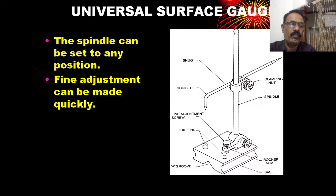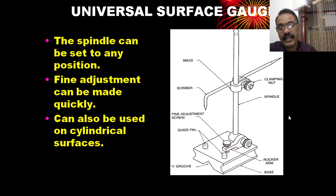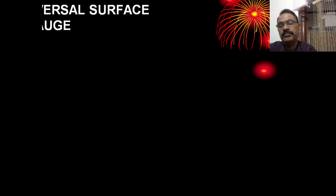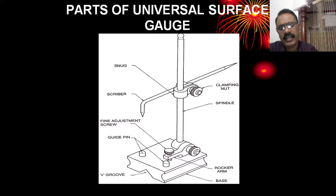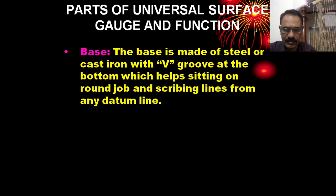The universal surface gauge has a magnetic base, so fine adjustment and accurate setting can be made. It can also be used on cylindrical surfaces. The V-groove is provided under the base for use on cylindrical surfaces. The base is made up of steel or cast iron.